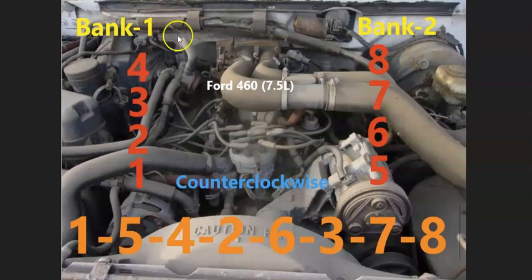Bank one is going to be on the passenger side, but bank two is going to be on the driver's side. If you ever need to know what side of an engine is bank one or bank two, just find the number one cylinder. That side of the engine is always bank one, and the opposite of that is always bank two.